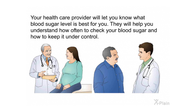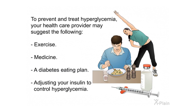Your health care provider will let you know what blood sugar level is best for you and will help you understand how often to check your blood sugar and how to keep it under control. To prevent and treat hyperglycemia, your health care provider may suggest exercise, medicine, a diabetes eating plan, and adjusting your insulin.